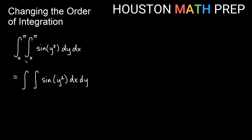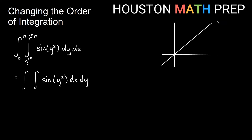We're integrating dy in the original, which means these are y equals bounds inside. Let's graph those — we're in the first quadrant of the xy plane. So I have y equals x, which is the line with slope 1 through the origin. And then y equals pi would be a horizontal line at about 3.14. And from 0 to pi in the x direction, so 0 and this must be pi.